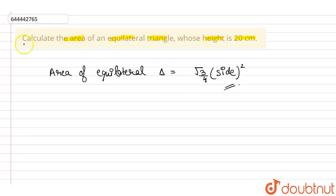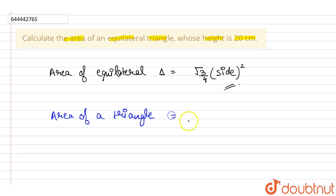Now, the area of a simple triangle is equal to half multiplied by base multiplied by height. And the height of the equilateral triangle is given to us as 20 centimeters.